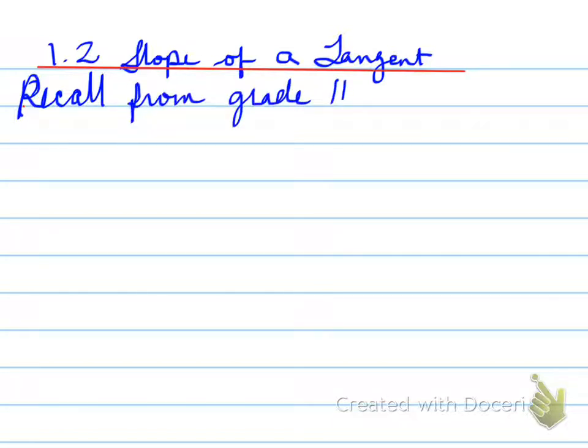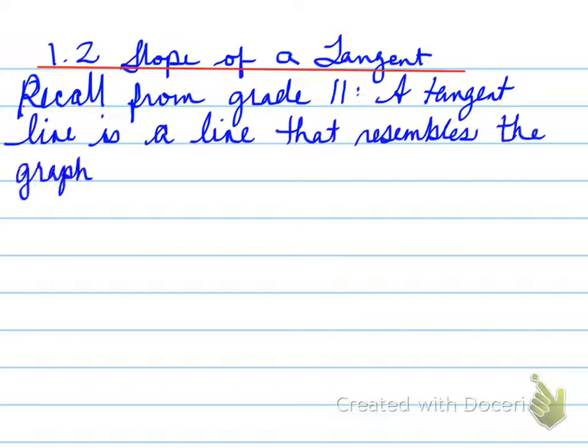First of all, recall from grade 11. A tangent line is a line that resembles the graph at a particular point. So, for example...